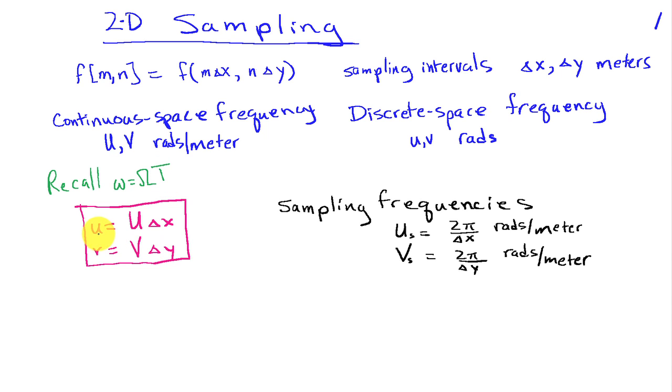The same relationships apply here in that our discrete space frequency lowercase u is equal to our continuous space frequency uppercase U times the sampling interval delta x. Similarly, the discrete space v equals continuous space V times the sampling interval delta y. Delta x and delta y imply sampling frequencies, which we'll denote as u sub s and v sub s, and the values of those are 2 pi divided by delta x and 2 pi divided by delta y, respectively, with units of radians per meter.